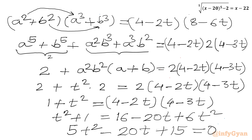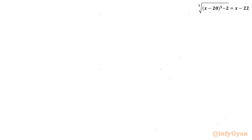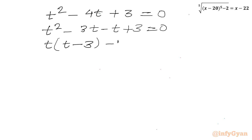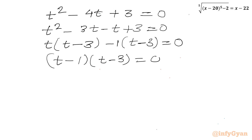We have one quadratic equation in t, and remember t was ab. Dividing by 5: t squared minus 4t plus 3 equal to 0. Factorizing: t squared minus 3t minus t plus 3 equal to 0, giving (t minus 1)(t minus 3) equal to 0. So t equals 1 or t equals 3.